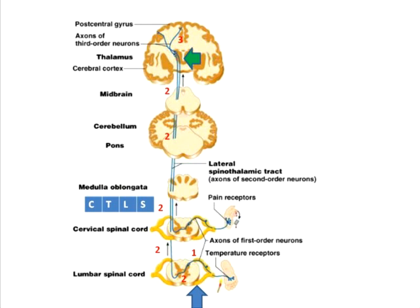L represents the lumbar and S the sacral fibers. As fibers keep getting added, the sacral fibers are more medial, while the last-added cervical fibers are more lateral.